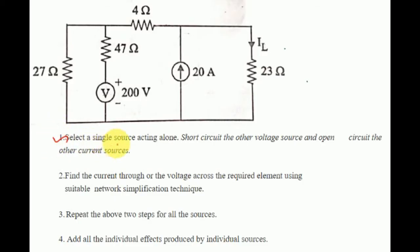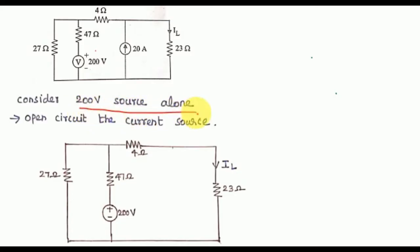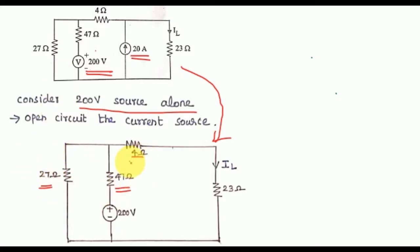First step: select a single source acting alone. First, consider the 200V source alone. The current source is open-circuited and removed. The circuit diagram is drawn with 27 Ohm, 47 Ohm, and 4 Ohm resistors. This is the first step.